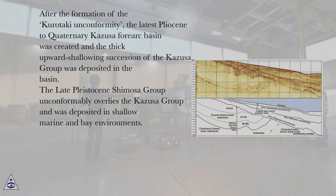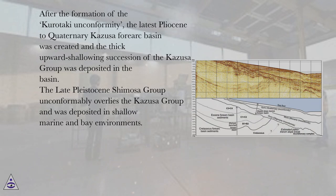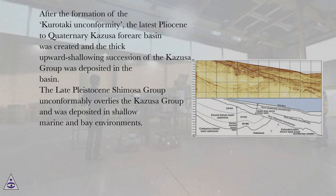After the formation of the Kurotaki Unconformity, the latest Pliocene to Quaternary Kazusa Forearc Basin was created, and the thick upward-shallowing succession of the Kazusa Group was deposited in the basin. The late Pleistocene Shimosu Group unconformably overlies the Kazusa Group and was deposited in shallow marine and bay environments.